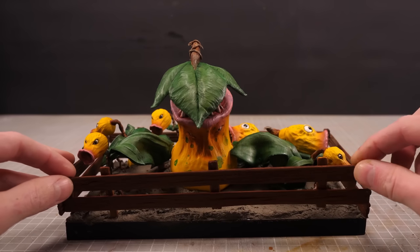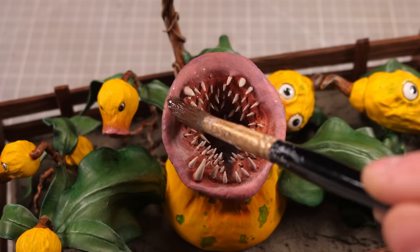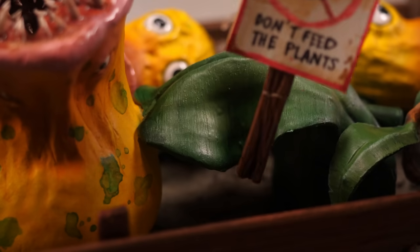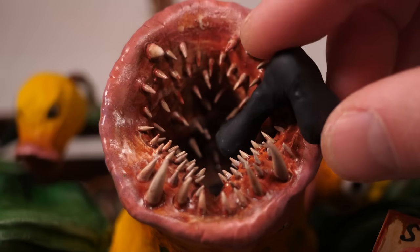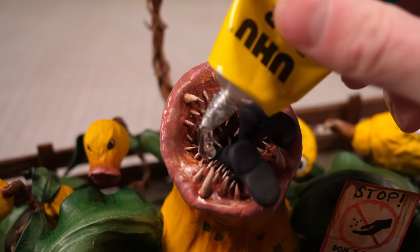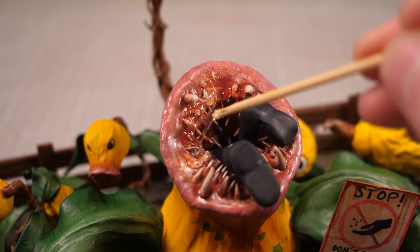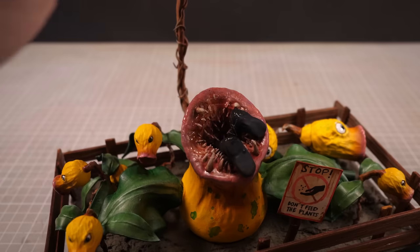I'll then stick the front fence in place, fold Victreebel's vine tail out of the way, then add some much needed gloss varnish to the mouth to make it extra goopy. I also made a tiny don't feed the plants sign off camera as well as a pair of little black boots that I can fit into Victreebel's mouth.